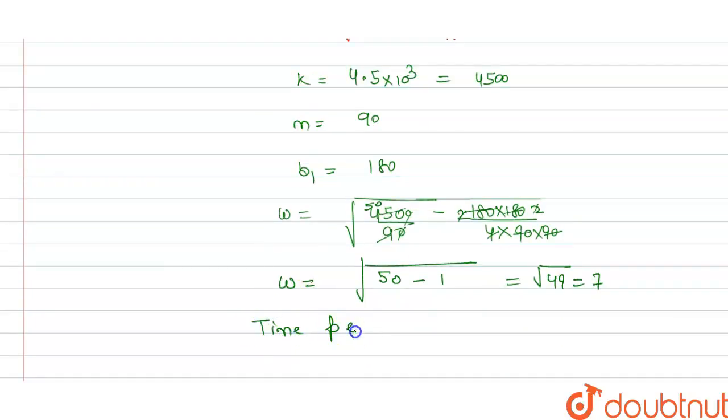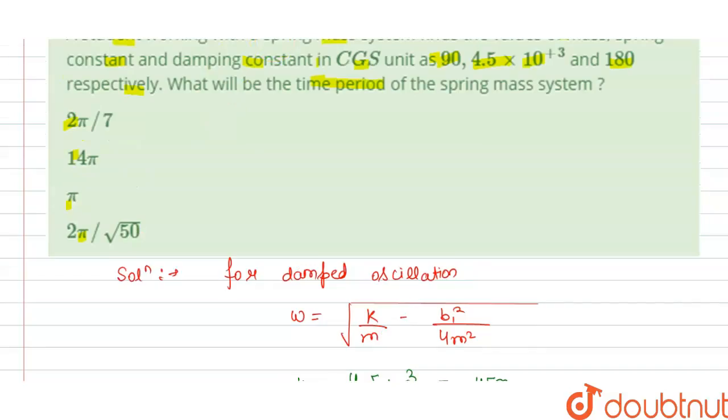And we know that time period T is equal to 2 pi divided by omega. So we have omega is 7, so we have the time period is 2 pi divided by 7 seconds. This is the answer for this question. Now we check which option is correct. Our option A is correct. Thank you.